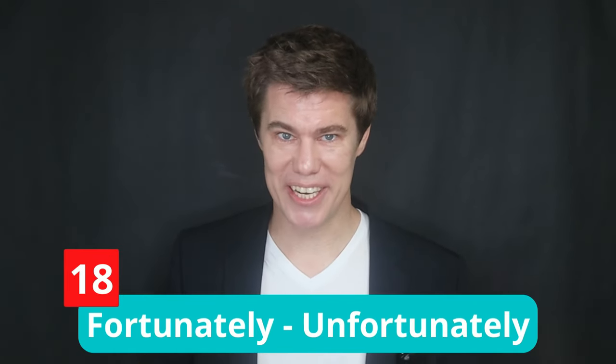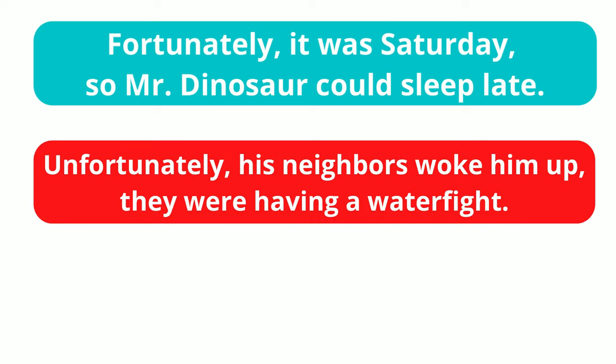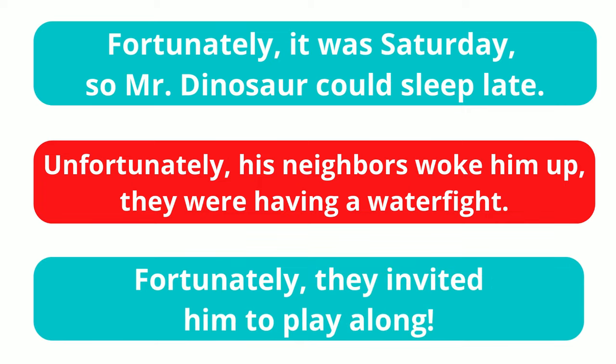Sentence chains. Start telling a story with your student and take turns to add a sentence, seeing where it takes you. It's a good way to practice conditional clauses. Fortunately/Unfortunately: a super simple game with no resources required and a minimum of just two players. One person says a sentence beginning with 'fortunately,' and the next person begins with 'unfortunately.' For example: 'Fortunately, it was Saturday and Mr. Dinosaur could sleep until 10 a.m.' 'Unfortunately, his neighbors woke him up — they were having a water fight.' 'Fortunately, they invited Mr. Dinosaur to play with them.' See how long you can keep it up.